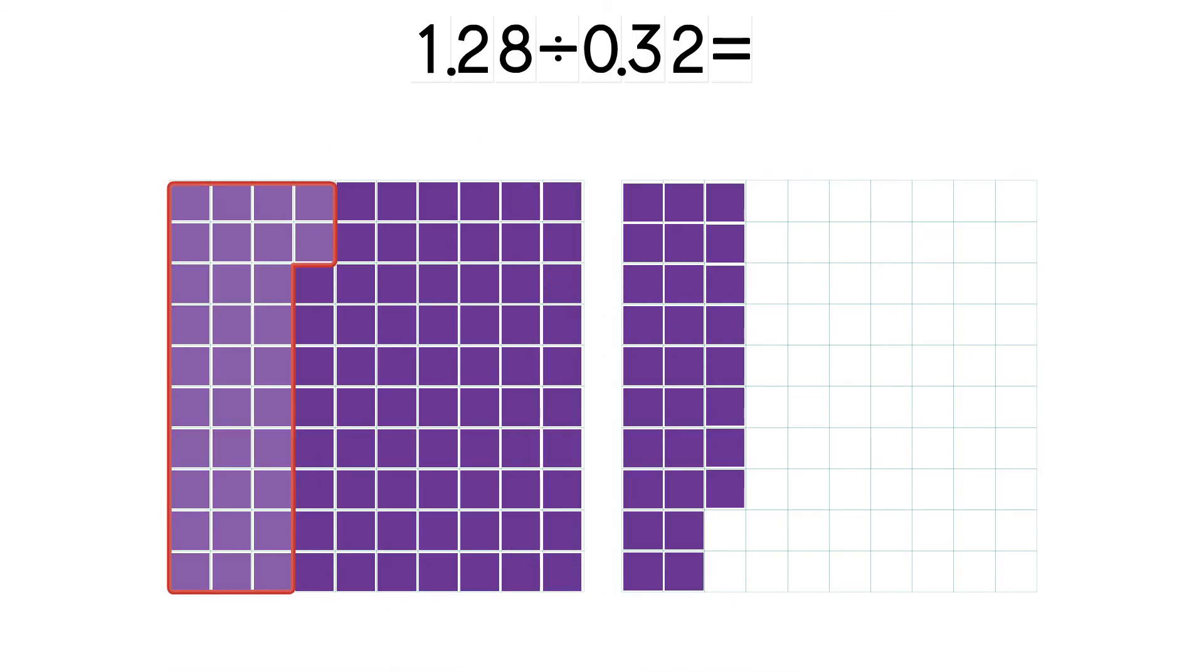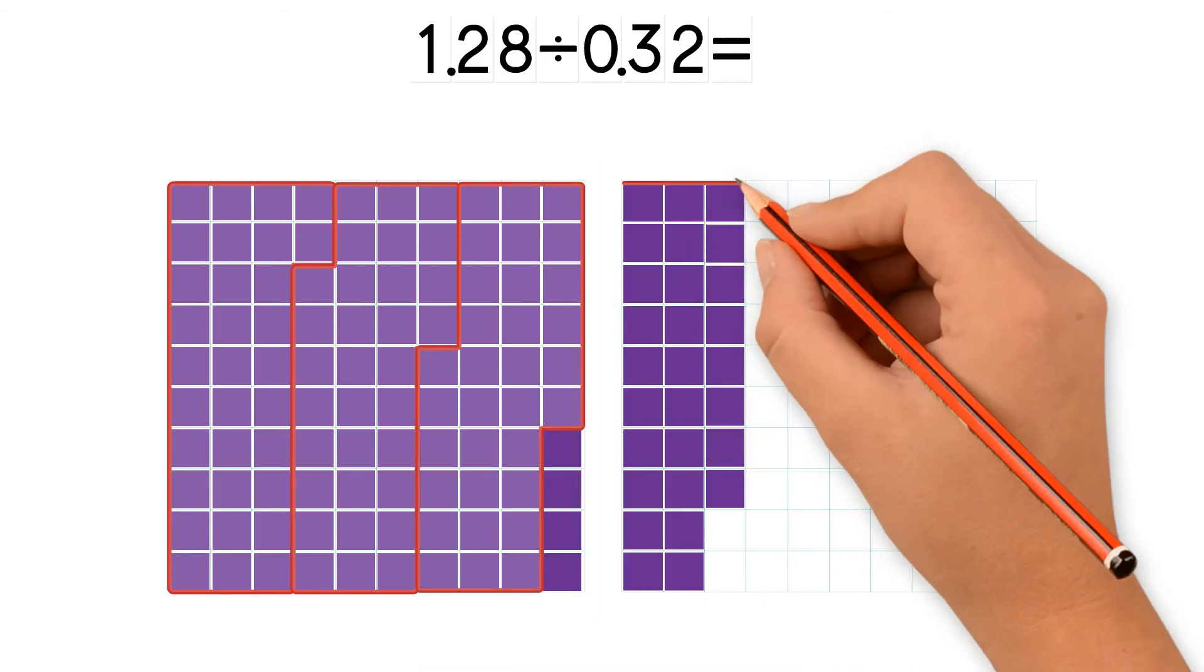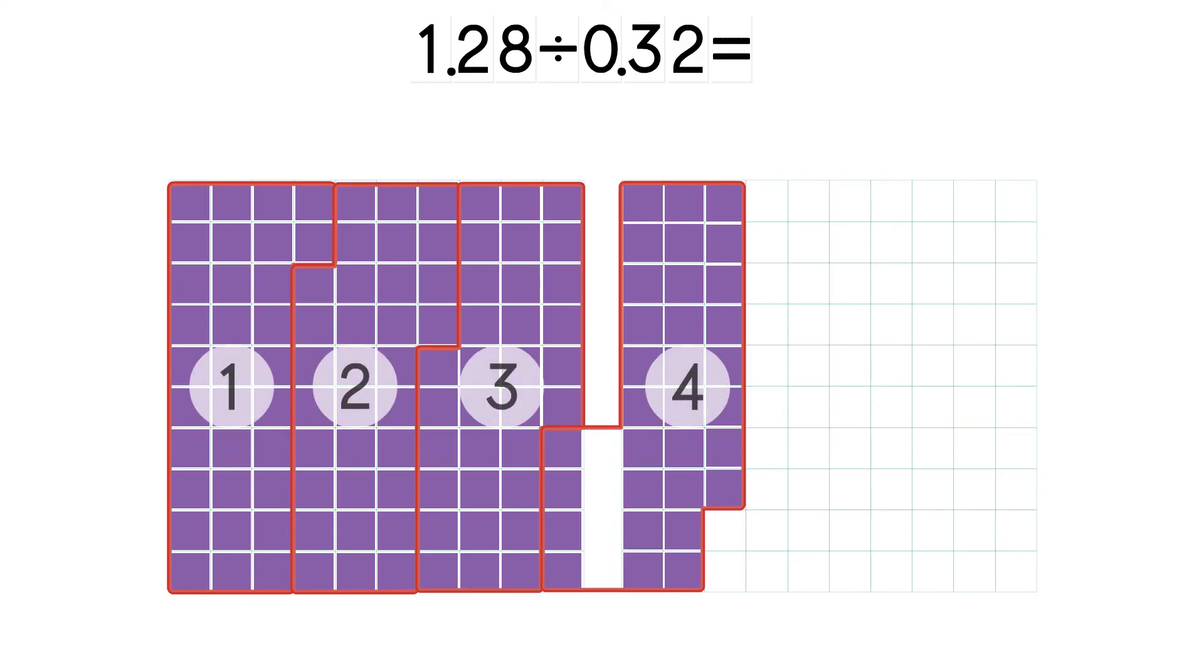Divide the 128 squares into groups of 32 hundredths to represent the divisor, 0.32. Now we can count the groups. There are 4 groups of 0.32 in 1.28. So 1.28 divided by 0.32 equals 4.